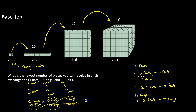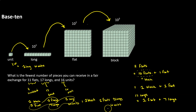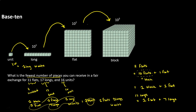So we have 1 block, 2 flats, 8 longs, and 6 units. The fair exchange for 11 flats, 17 longs, 16 units is 1 block, 2 flats, 8 longs, 6 units. And remember, our goal was to have the fewest number of pieces possible. We went from having 44 pieces to now having 17 pieces.